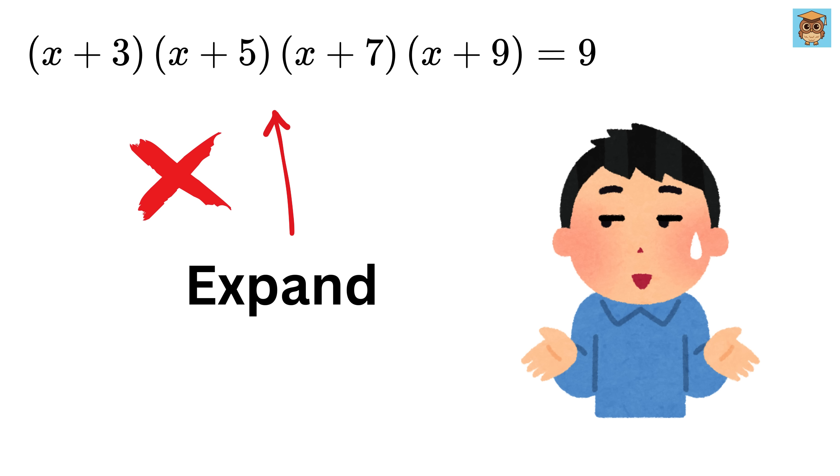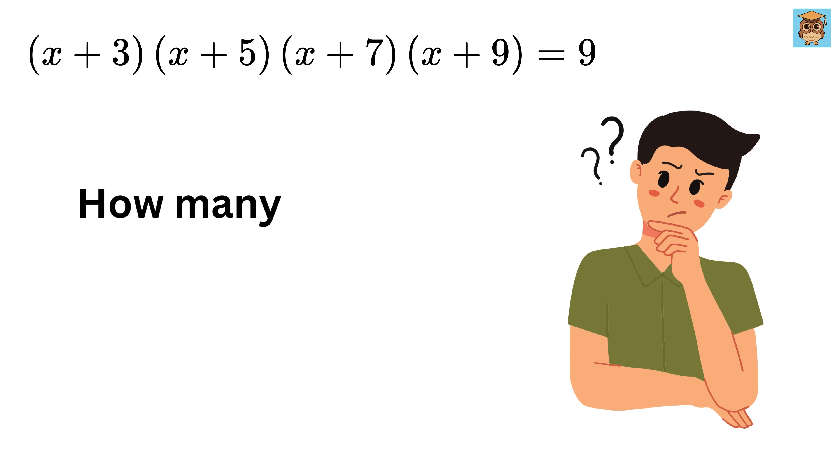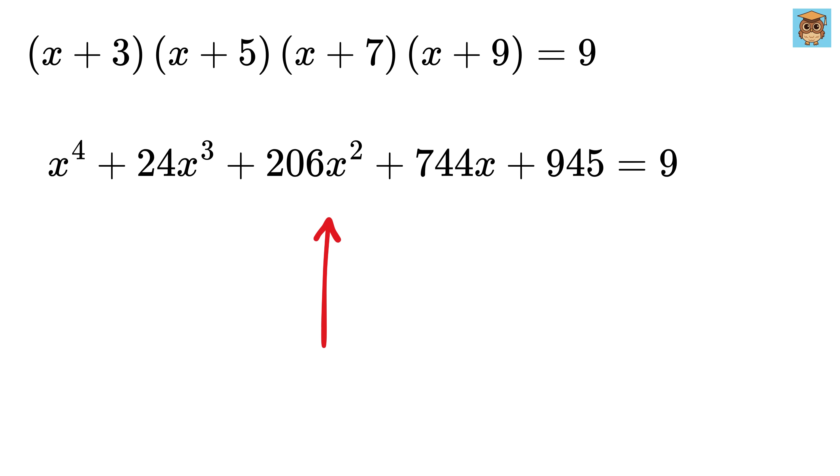So expanding it might not be the most helpful approach here. By the way, take a moment to look at this quartic expression. What do you think? How many values of x do you expect we'll get? Since we have a quartic expression which means degree here is four, it's natural to assume we'll get four values for x. Or do we?